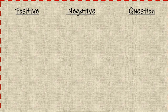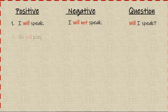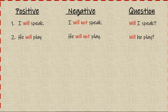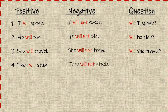The first example: positive — 'I will speak'; negative — 'I will not speak'; question — 'Will I speak?' Number two: 'He will play,' 'He will not play,' 'Will he play?' Number three: 'She will travel,' 'She will not travel,' 'Will she travel?'